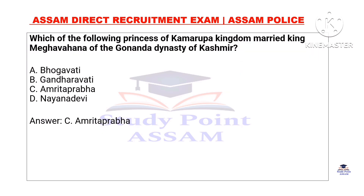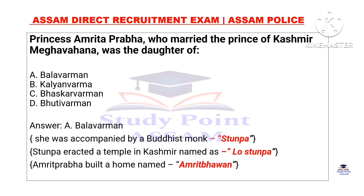The princess of Kamarupa kingdom was married to Meghbhanu of the Gonanda dynasty of Kashmir. Kashmir and the Gonanda dynasty — Meghbhanu was given in marriage. This is Amritaprabha, who was born in the Brahman dynasty. Princess Amritaprabha, who married the prince of Kashmir Meghbhanu, was the daughter of Paisu.